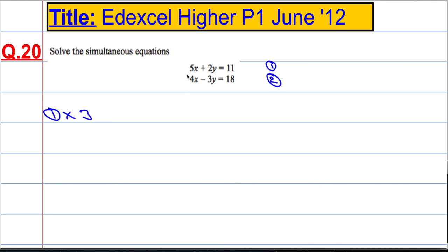So we get 3 times 5x is 15x, and 3 times 2y is 6y, and 3 times 11 is 33. Remember, we're multiplying everything by 3.